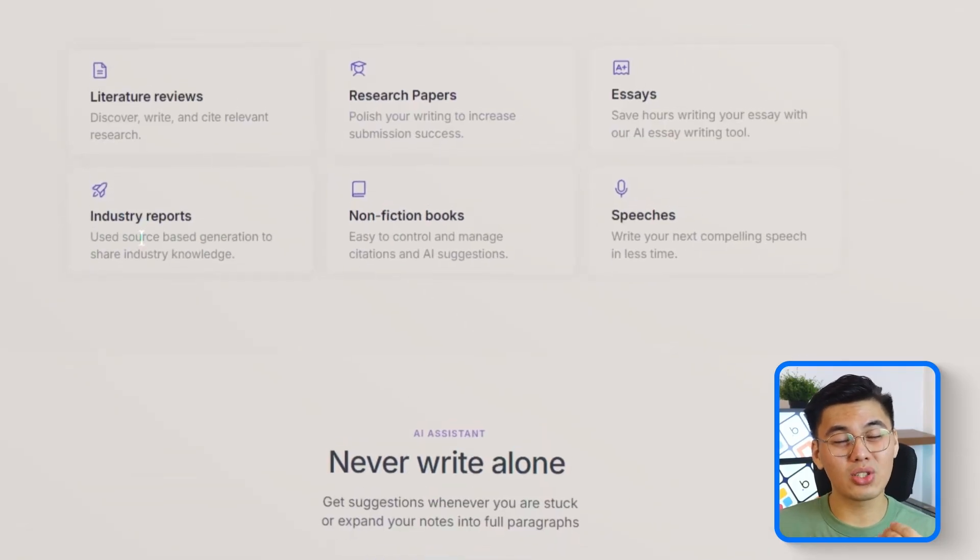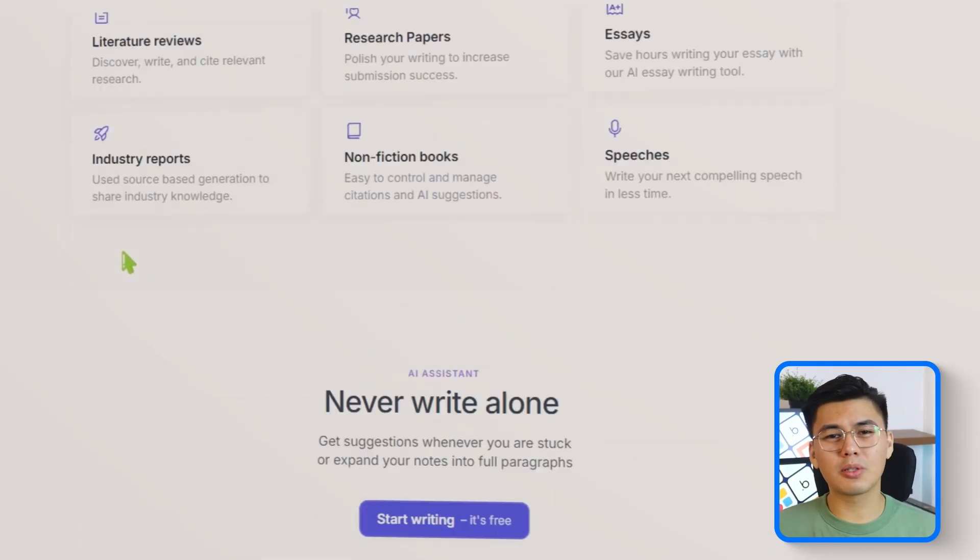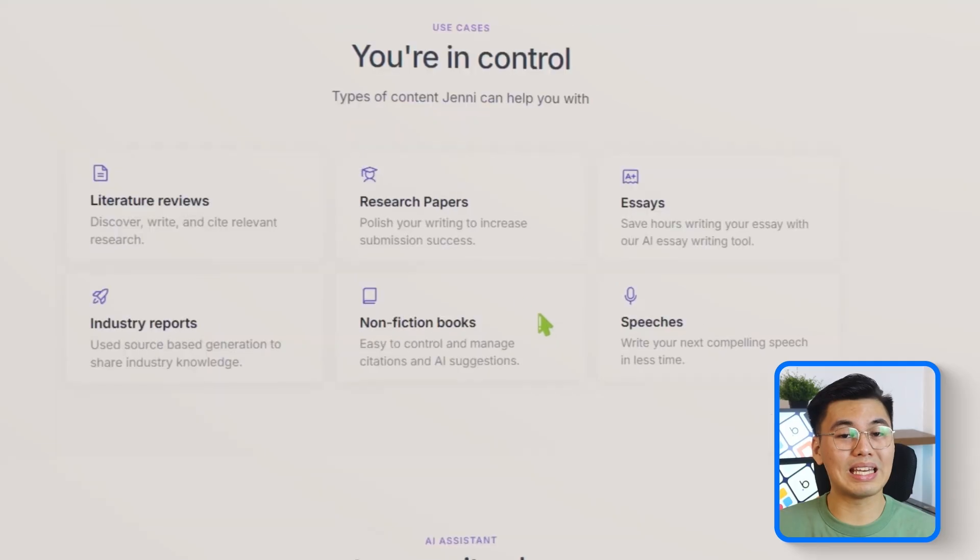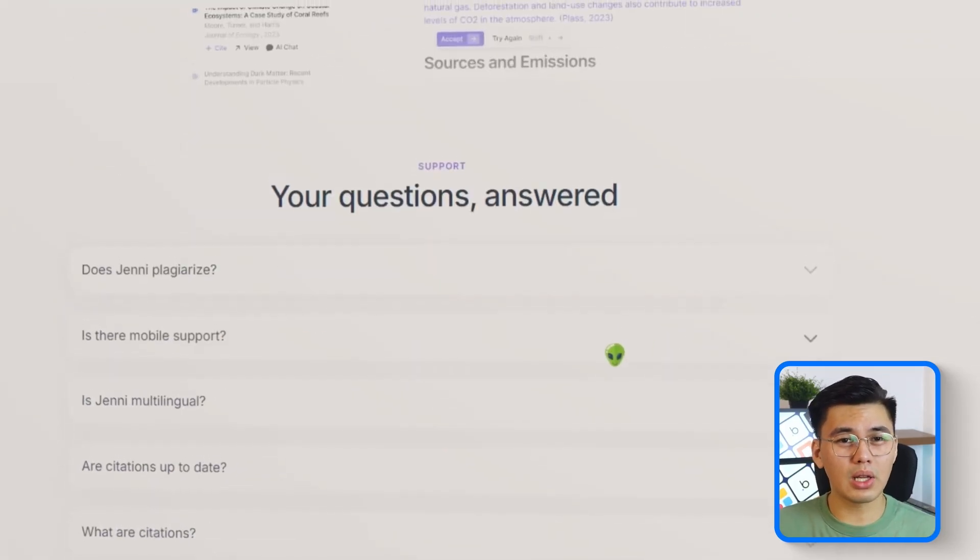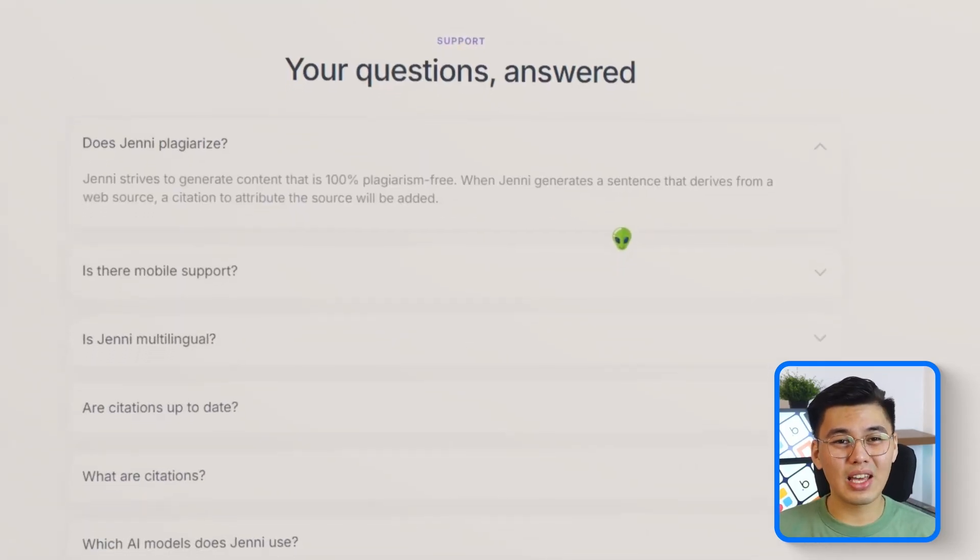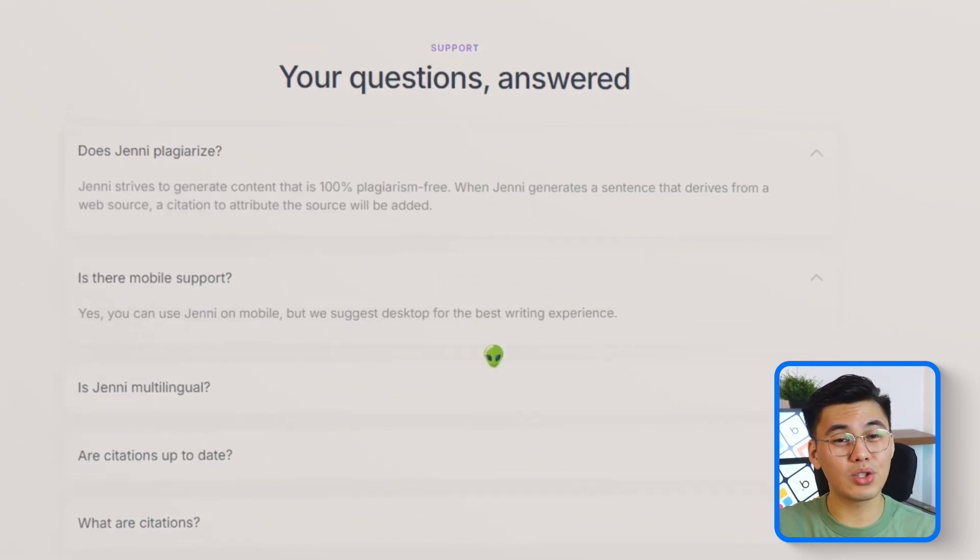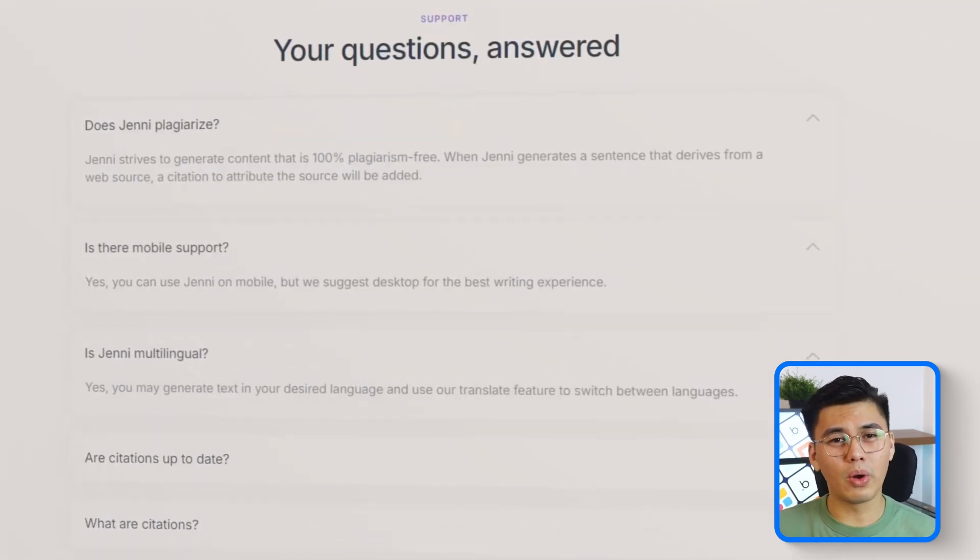You'll be able to generate citations automatically, build outlines, pull information from uploaded PDFs, and refine drafts with a single click. All of this sets the stage for generating a complete research proposal from one well-crafted prompt.